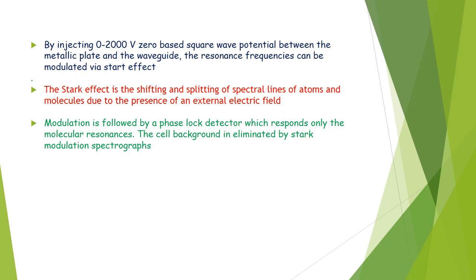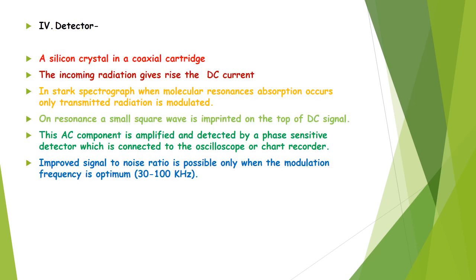Here, the resonance comes between the gas kept in the sample cell and the radiation from the klystron source in the atmosphere of the electric field of its potential 0 to 2000 volts. The cell background is illuminated by Stark monograph.